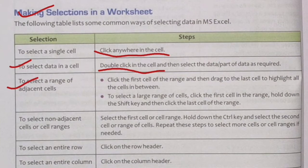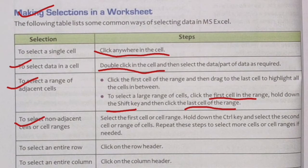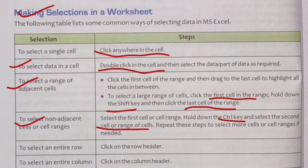To select non-adjacent cells or cell ranges — cells that are not in a contiguous block — first select the first cell, then hold down the Control key and select each additional cell or cell range. Repeat this step to select more cells or cell ranges as needed.